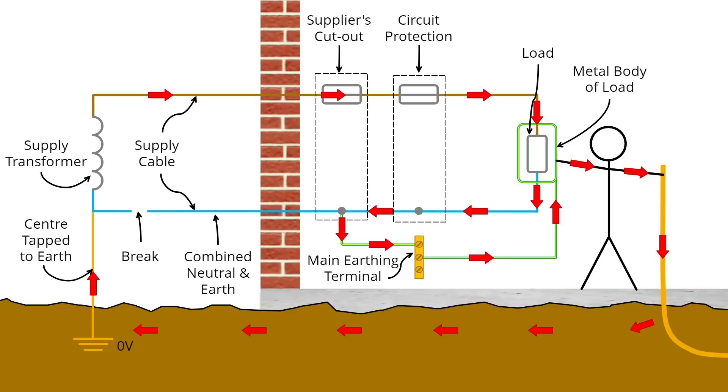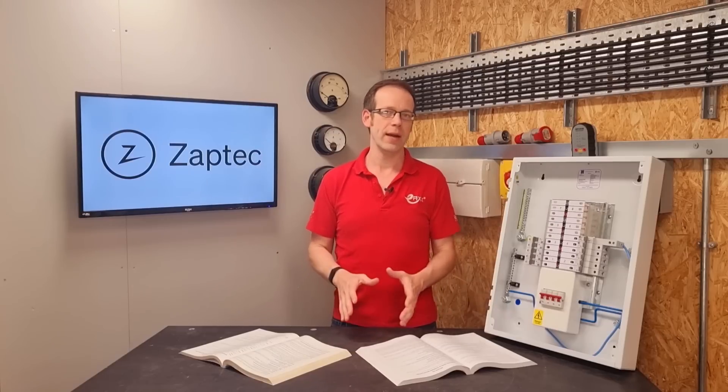Inside the property we can resolve this problem by connecting all the exposed conductive parts of a circuit to the extraneous conductive parts via the main earthing terminal, which means that all the metal work is at the same potential and a person is much less likely to get a shock to the literal earth that we walk around on.